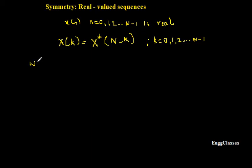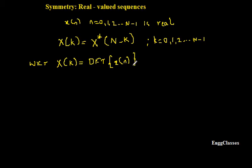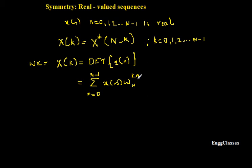Now how do I prove this? Starting with the proof: we know that X(k) is the DFT of the sequence x(n). The formula is the summation from n equal to 0 to N minus 1 of x(n) times W_N to the power k·n. This is the definition of DFT of any given sequence.